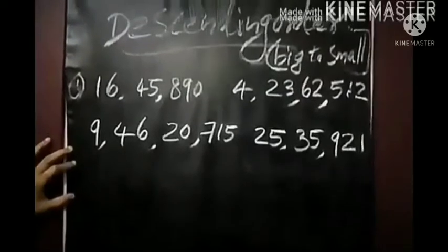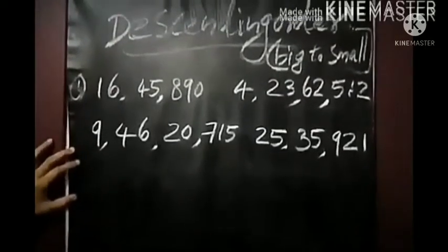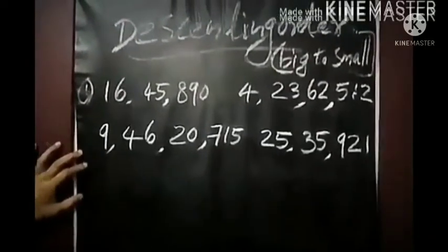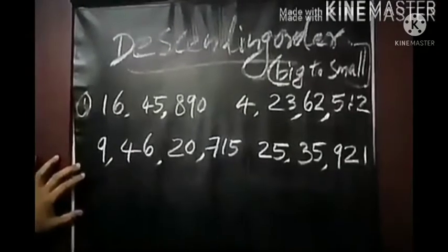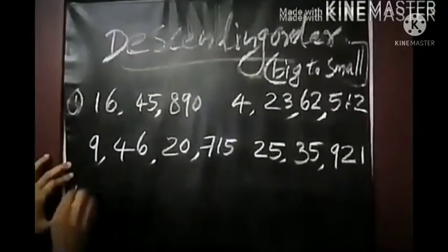Now, descending order is the opposite of ascending order — descending order means big to small.